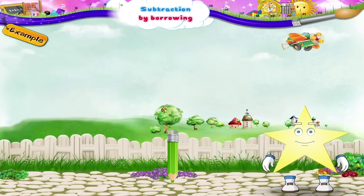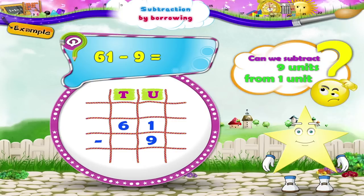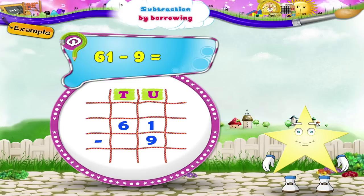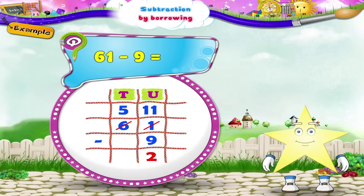Let us now solve this example: sixty-one minus nine. Let us first write the numbers in proper columns. Can we subtract nine units from one unit? No! So we shall untie six tens into five tens and ten units. Now carry ten units to one unit. We get a total of eleven units. We shall subtract nine units from eleven units — the answer is two units. Write five tens as it is in the tens place of the answer. So sixty-one minus nine is equal to fifty-two.